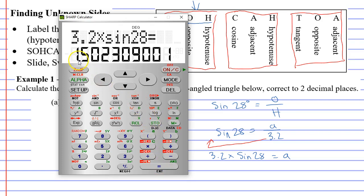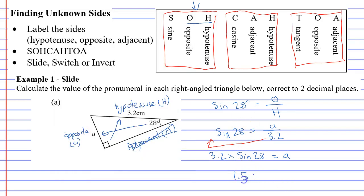Sine 28 equals. And that has given us 1.5. Now, what we want to do is correct to two decimal places. So we're actually going to write 1.50. So coming back down here, 1.50 equals A, which is the same as saying A equals 1.50. And this is in centimeters, so we're going to write centimeters next to it. And now we've solved question A. So we'll move on to question B and follow the same process.